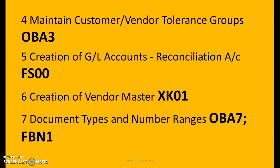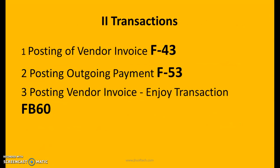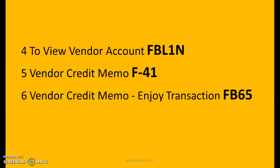Document types and number ranges — OBA7 and FBN1. For transactions: posting of vendor invoice — F-43; posting outgoing payments — F-53; posting vendor invoice enjoy transaction — FB60. To view the vendor accounts we can go to FBL1N. Vendor credit memo — F-41; vendor credit memo enjoy transaction — FB65.